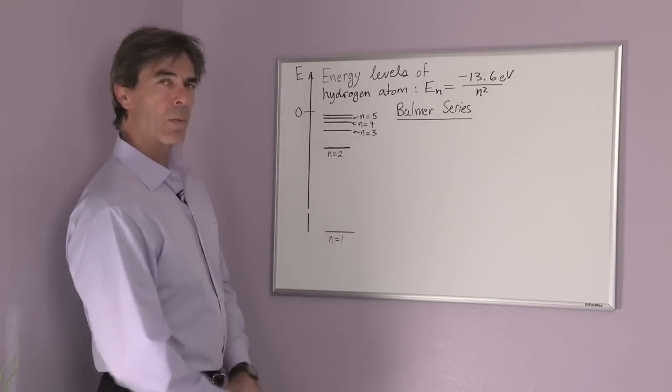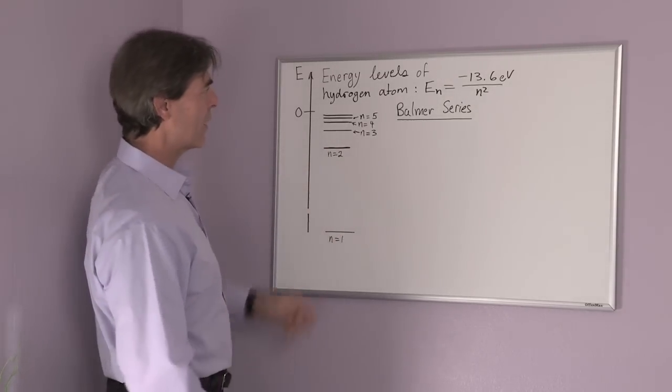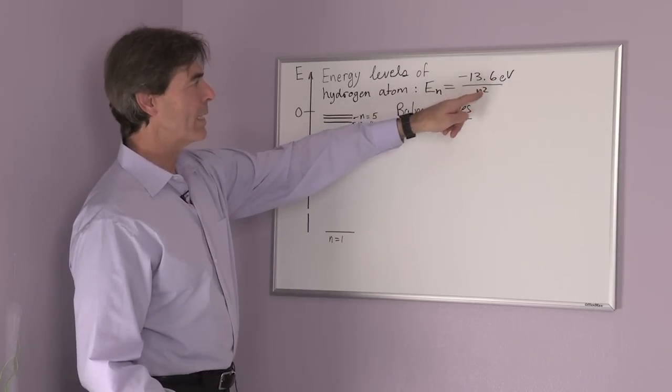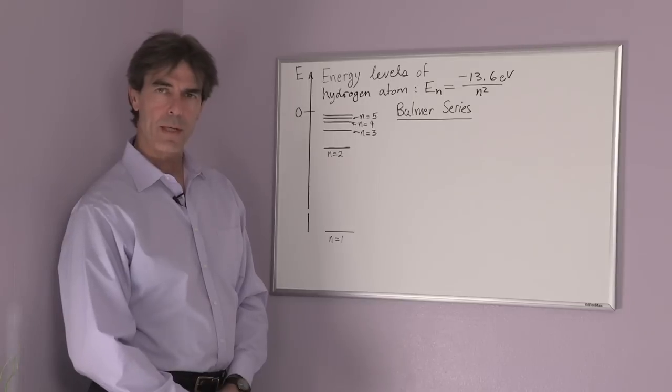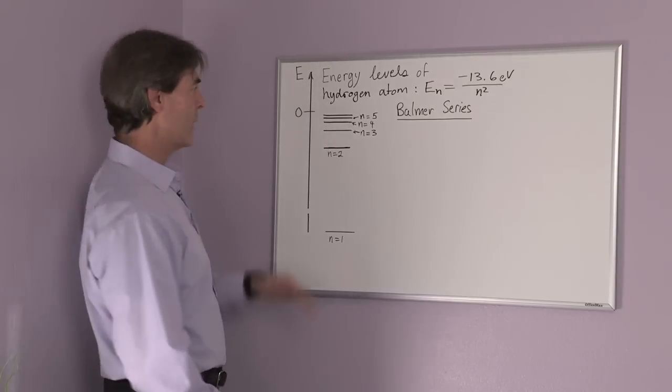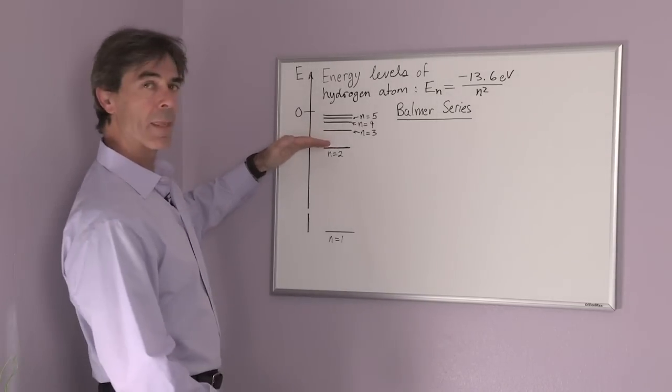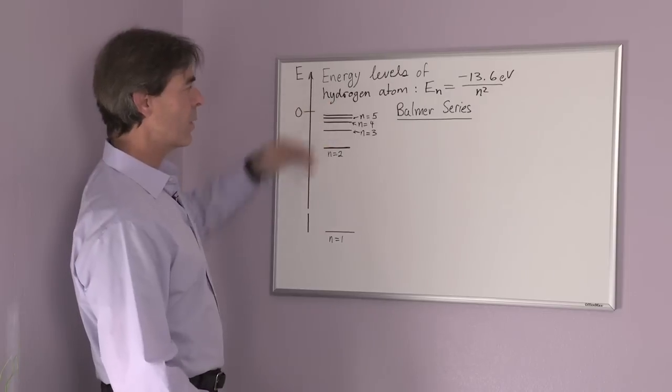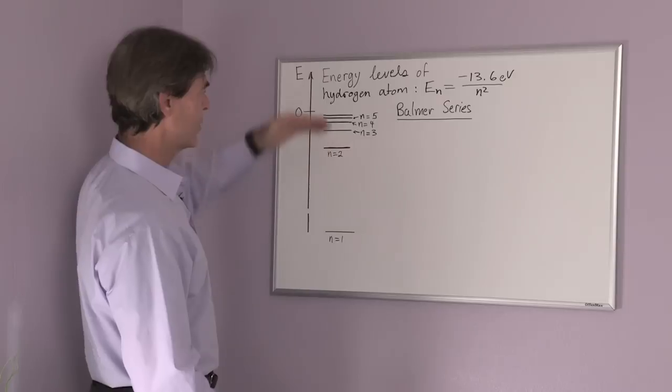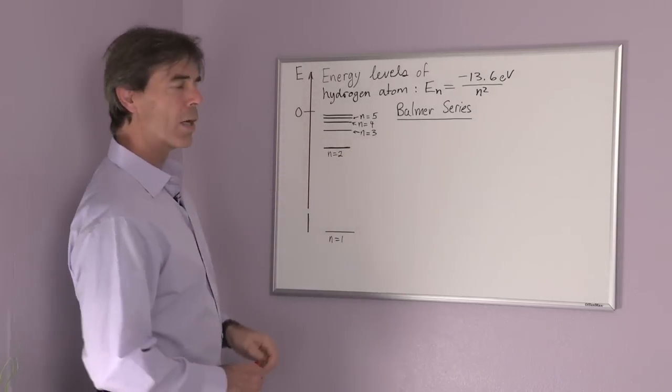The n equals two level is then 13.6 divided by two squared, or four, and that is minus 3.4 electron volts, and so on. We can describe each of these energy states by this one quantum number.